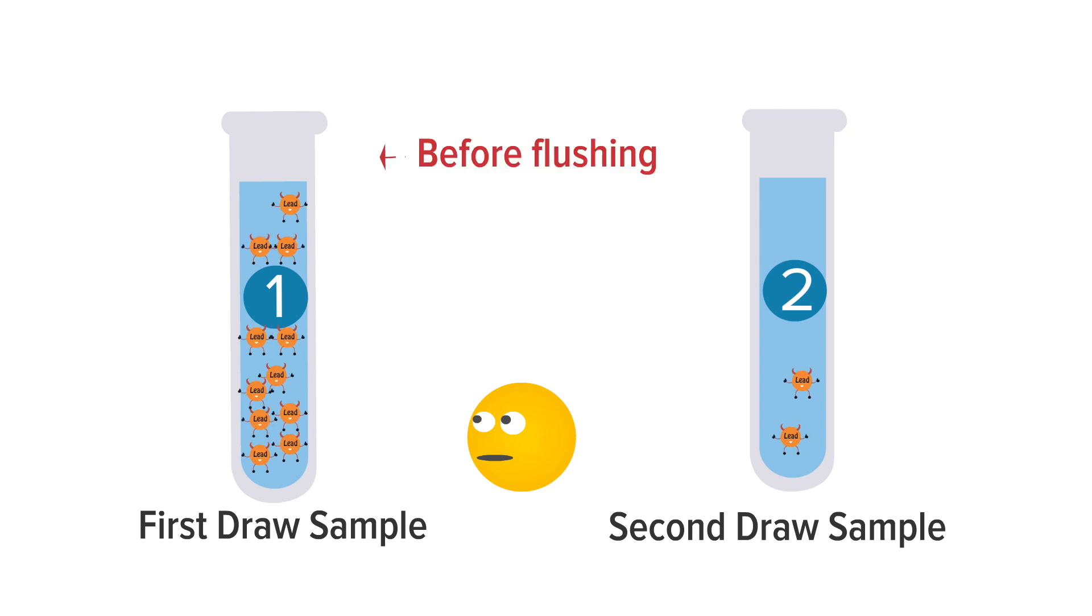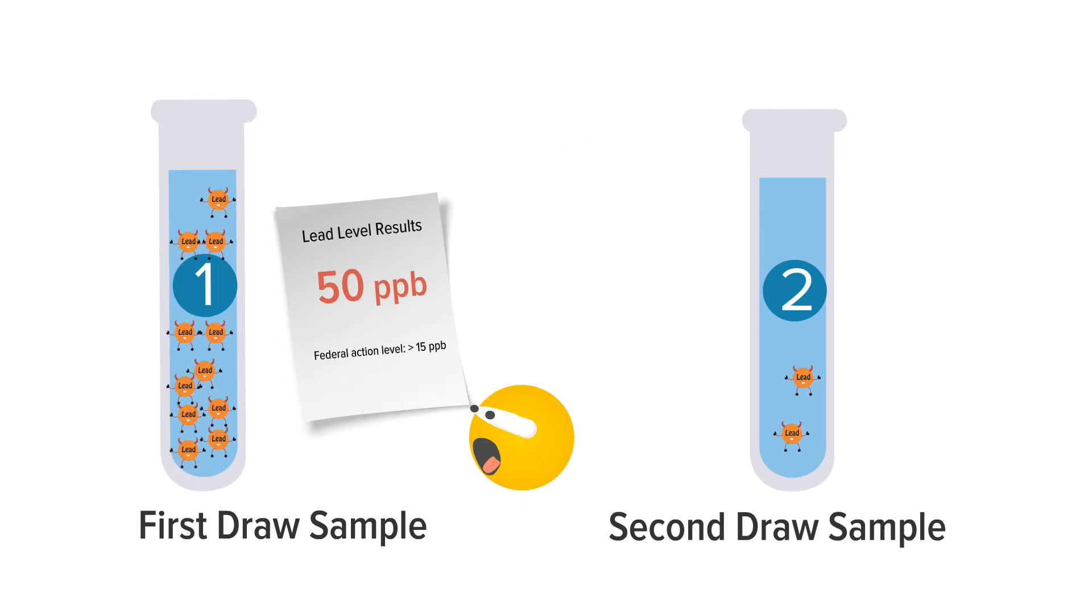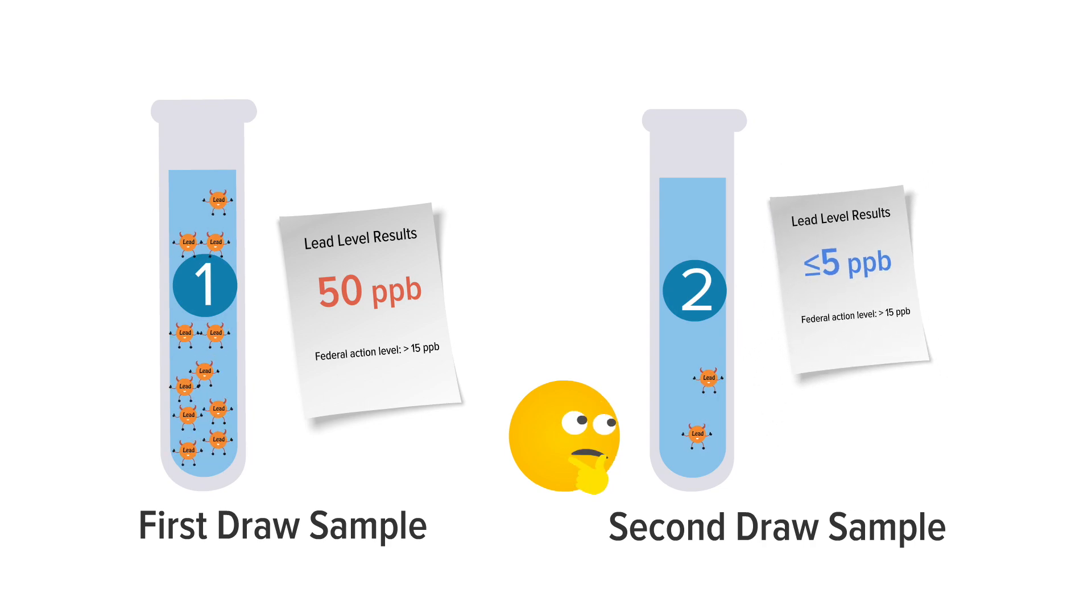If water has high levels of lead in the first sample, those levels typically decrease by the second sample.